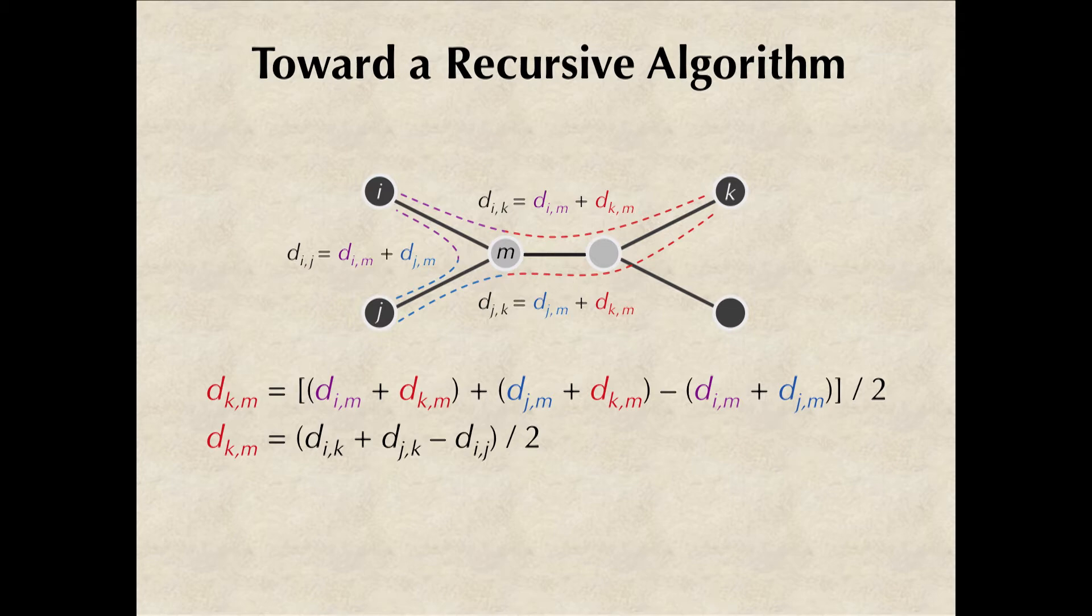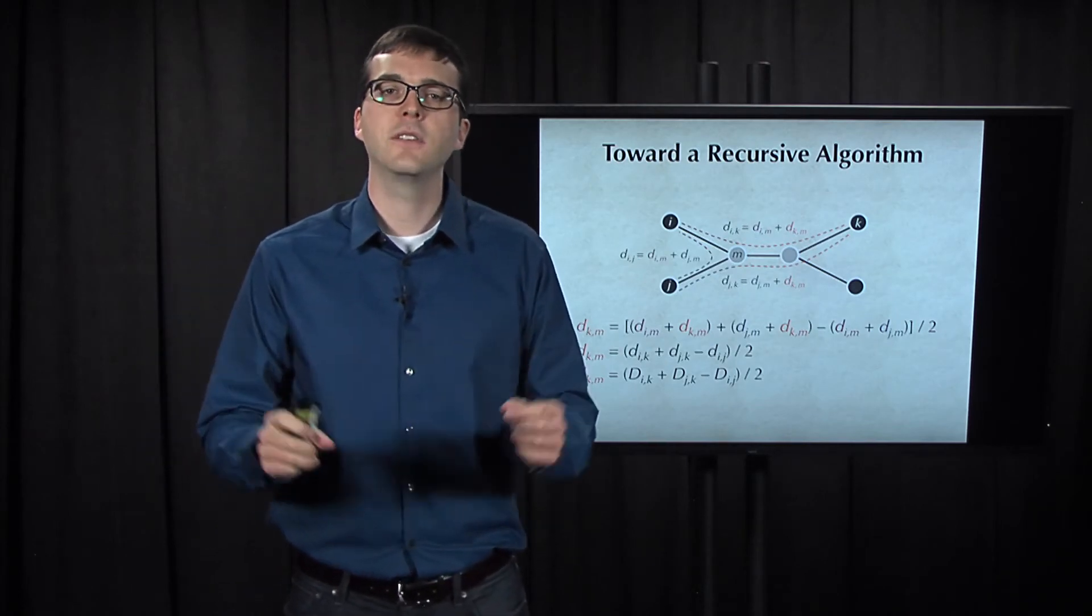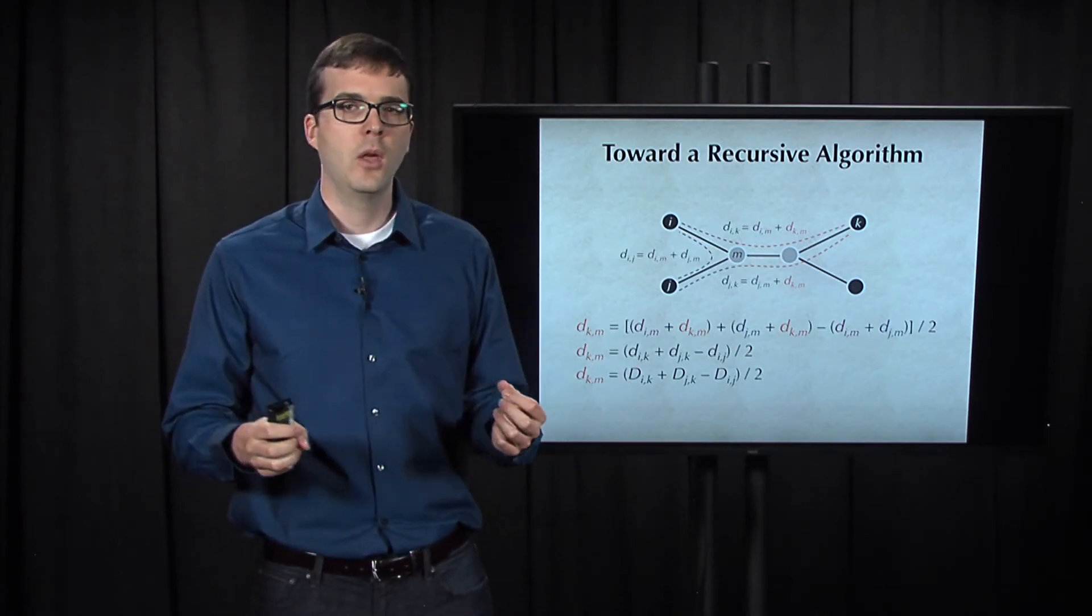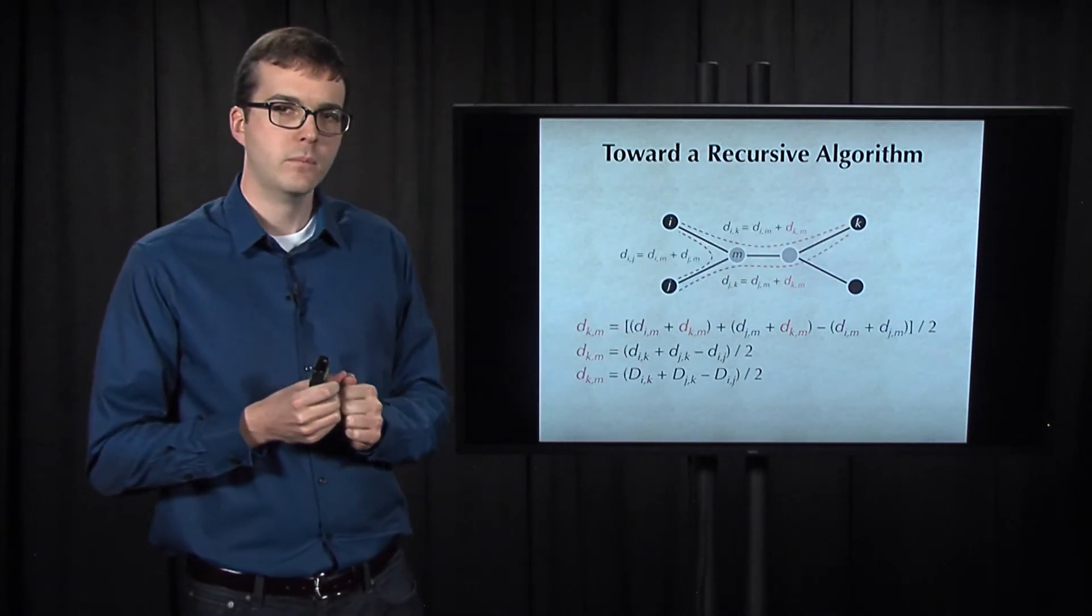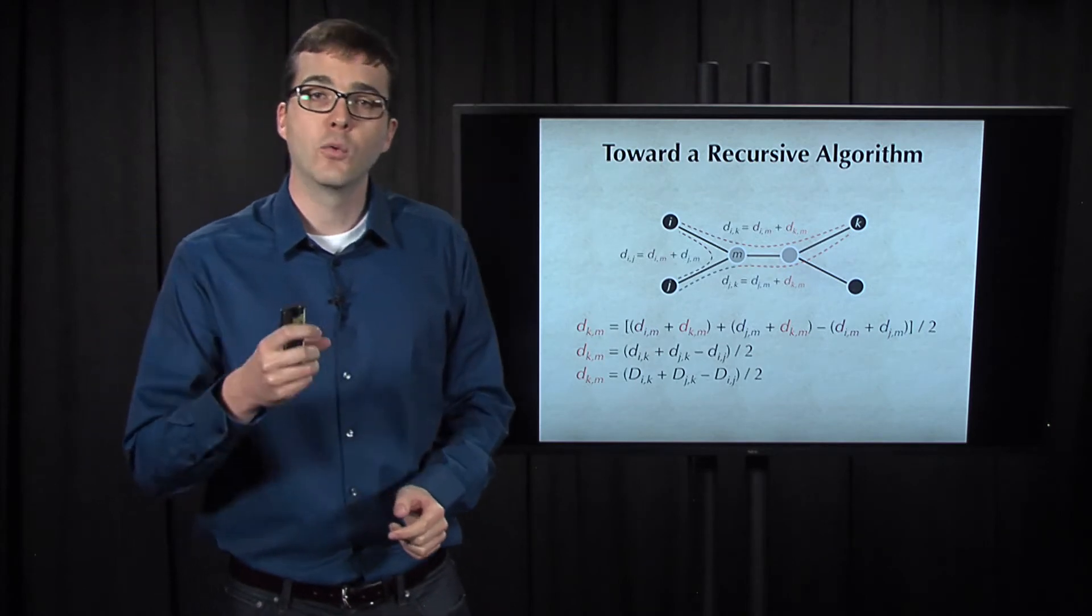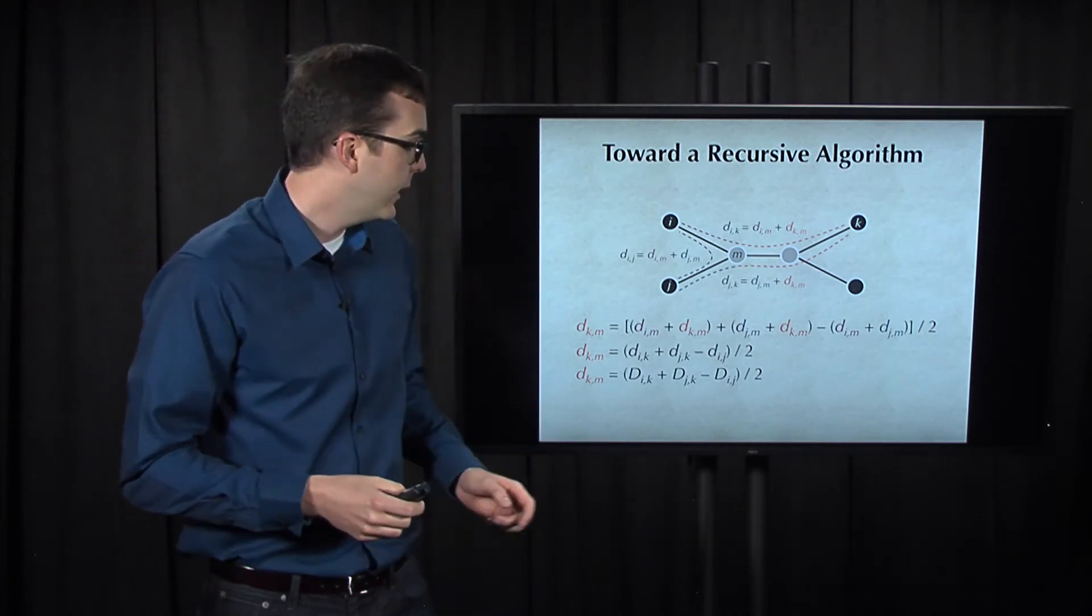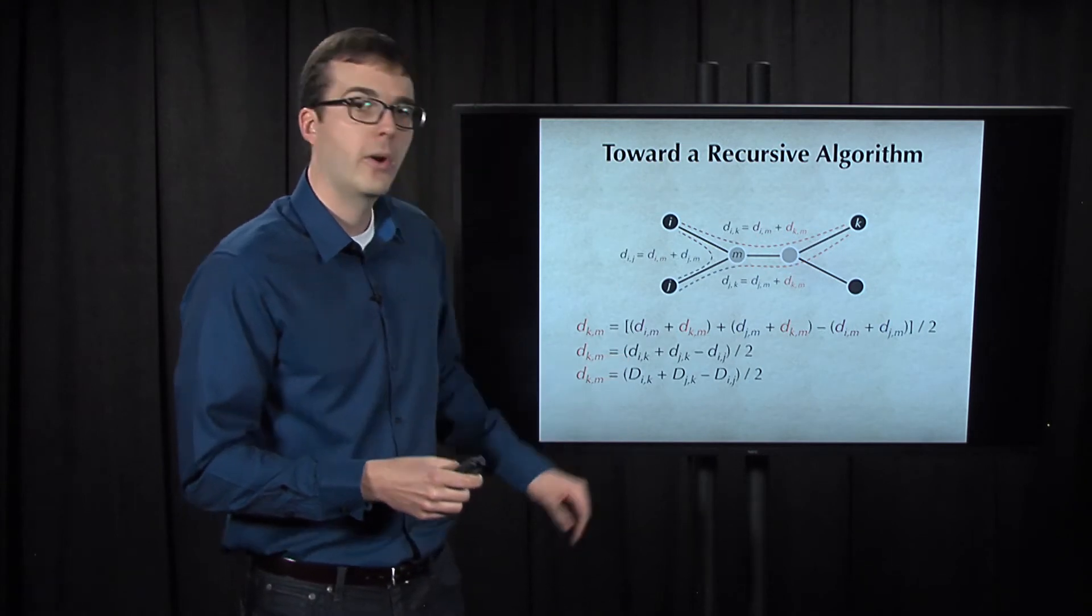And this is important, because when we're working with a distance matrix, we don't know a priori what the weights of the internal edges are. We just know the distances between leaves. But the expression on the right side of this equation is now written in terms of distances between leaves, so we can substitute a lowercase d here for an uppercase D.